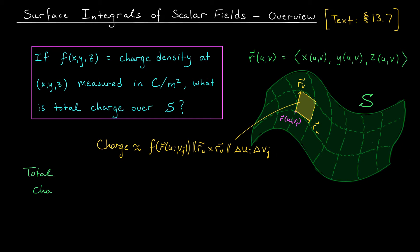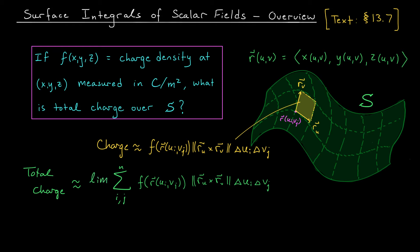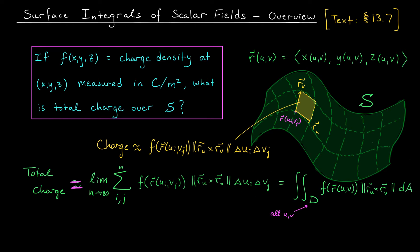This is an approximation of the total charge on just one patch, and of course we have to add up the approximations over all patches. So our total charge is approximately the sum over all patches of that expression. We're going to let the number of patches go to infinity — as the patches get smaller and smaller, our approximation gets better and better. Our total charge is the limit of this expression, which should remind you of the limit from double integrals. It turns out this equals the double integral over all possible values of u and v, which I'll call D, of f(r(u,v)) times the norm of r_u cross r_v dA, where the Δu Δv term turns into a tiny little area dA.